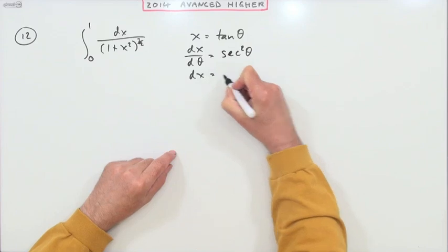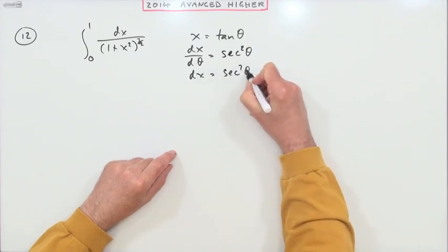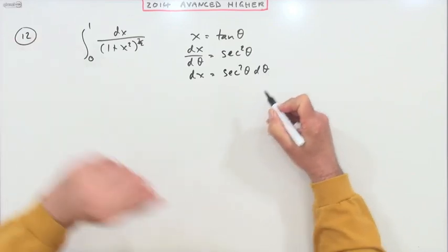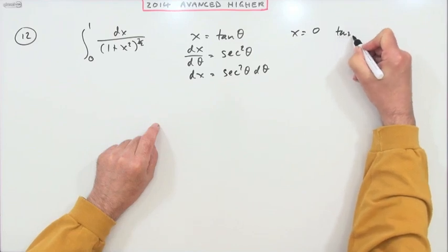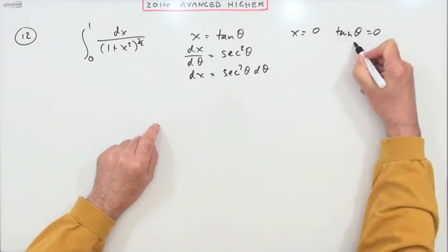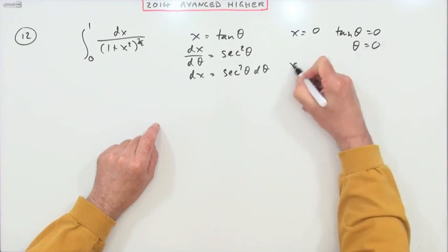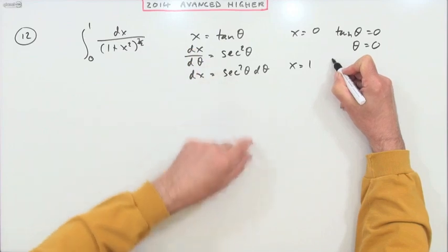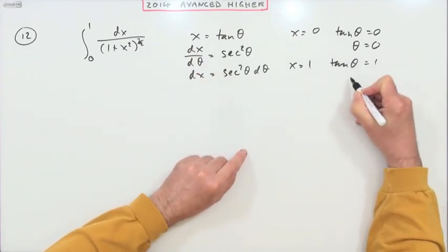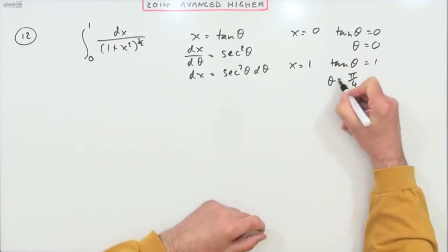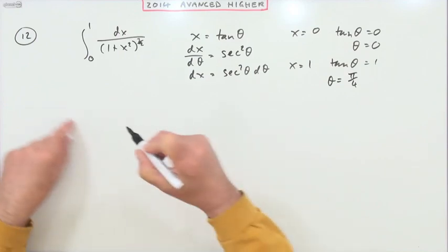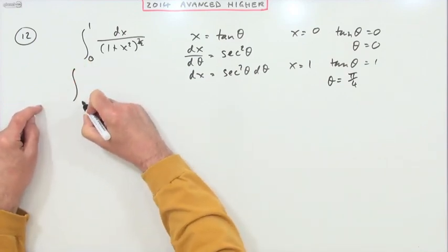So it means dx can be replaced by sec squared θ dθ, and changing the limits at the same time. If x equals 0, that means tan θ equals 0, so θ equals 0. And if x equals 1, then tan θ equals 1, and it's tan 45, that's π upon 4 for θ.